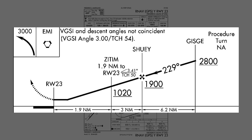Advisory glide paths require some additional knowledge to make them work for you in flight. Don't treat them like official vertical guidance such as an LPV or ILS, and still make sure you're meeting all minimums just like on a non-precision approach. Higher-than-standard temperatures can cause you to run afoul of some of these altitude restrictions even when flying the advisory glide path, but that's a topic for another video.